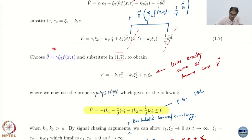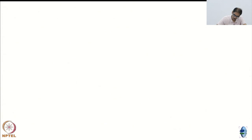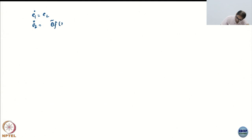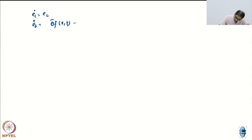We are essentially augmenting the state with a new variable. This new variable is the parameter update law. So your complete dynamics will look like: e1-dot is e2, e2-dot is theta-tilde times f(x,t) minus k2 times psi2.